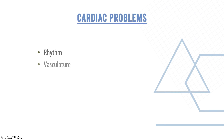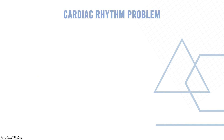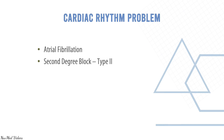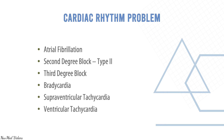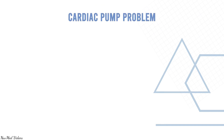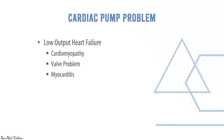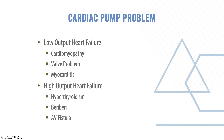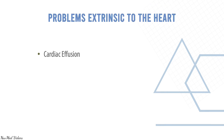Cardiac problems can be categorized as rhythm, vasculature, pump, and extrinsic to the heart. Rhythm problems include atrial fibrillation, second-degree block type 2, third-degree block, bradycardia, supraventricular tachycardia, and ventricular tachycardia. Cardiac vascular problems include acute coronary syndrome. Pump problems include low-output heart failure such as cardiomyopathy, valve problems, or myocarditis, or high-output heart failure as in hyperthyroidism, beriberi, and AV fistula.